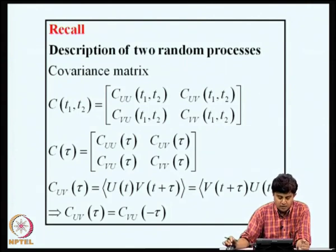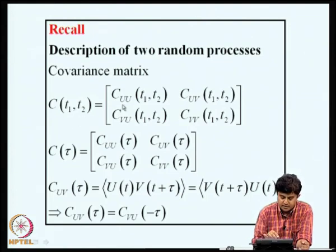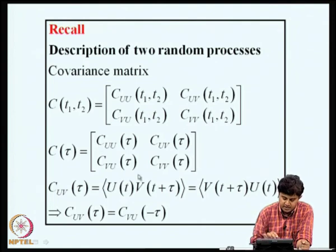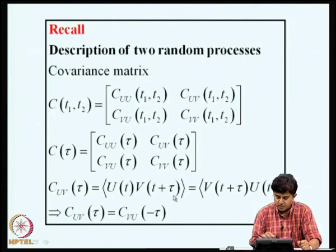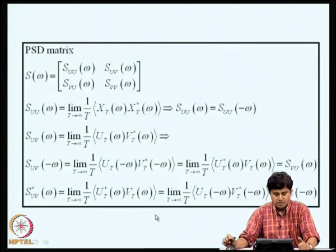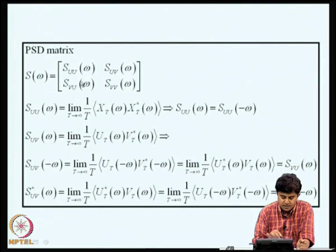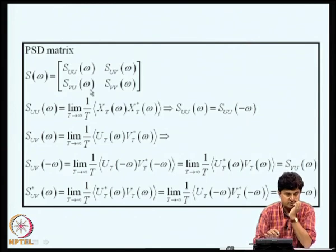We can quickly recall how to describe two random processes. Suppose we have random processes u(t) and v(t); we can define their covariance matrix given by C_uu(t1, t2), C_uv(t1, t2), and so on. If the process is stationary, we get C_uu(tau), C_uv(tau), C_vu(tau), and C_vv(tau), where C_uv(tau) = u(t)·v(t+tau), which equals v(t+tau)·u(t). Therefore, C_uv(tau) = C_vu(-tau). The associated power spectral density function matrix has diagonal terms which are auto PSDs and cross terms which are cross PSDs. The auto PSDs are real-valued whereas the cross PSDs are complex-valued.